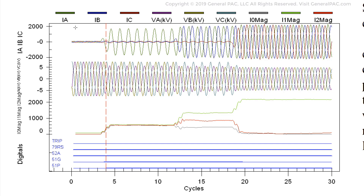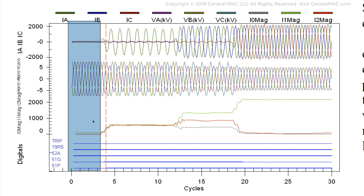Let's briefly look over this waveform. We have line currents shown on top — phase A, B, and C current quantities — then voltage quantities below that, then sequence component quantities, and then our digital signals. In this region, we have a very normal power system where the voltages are reference voltage quantities and the currents seem to be load currents. The 79RS is picked up and the 52A contact is asserted, meaning the breaker is closed and everything is in good condition.